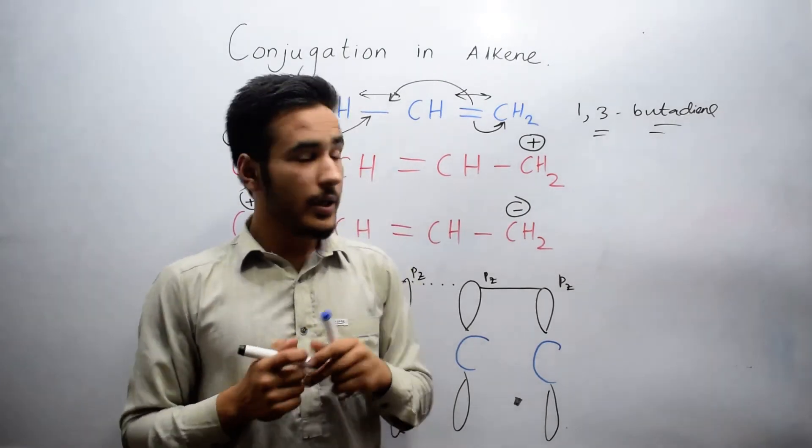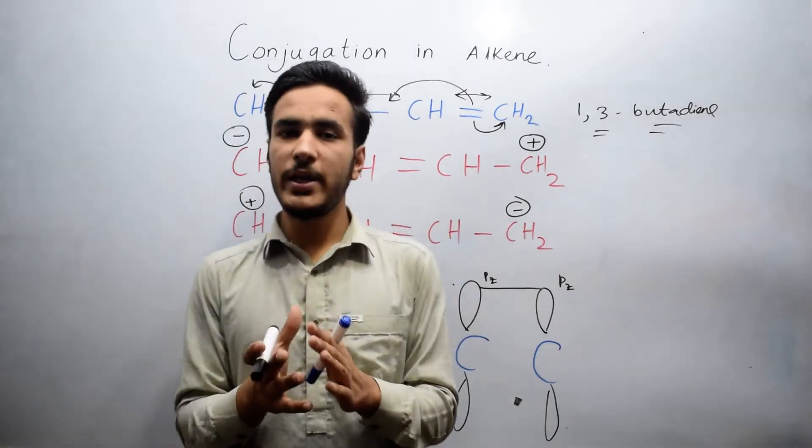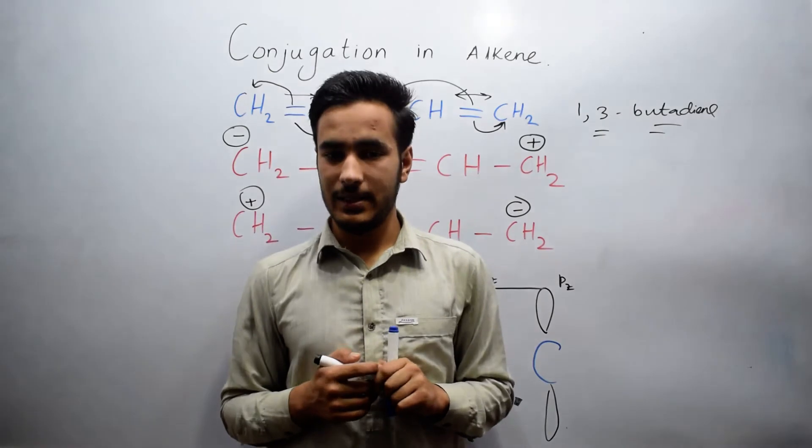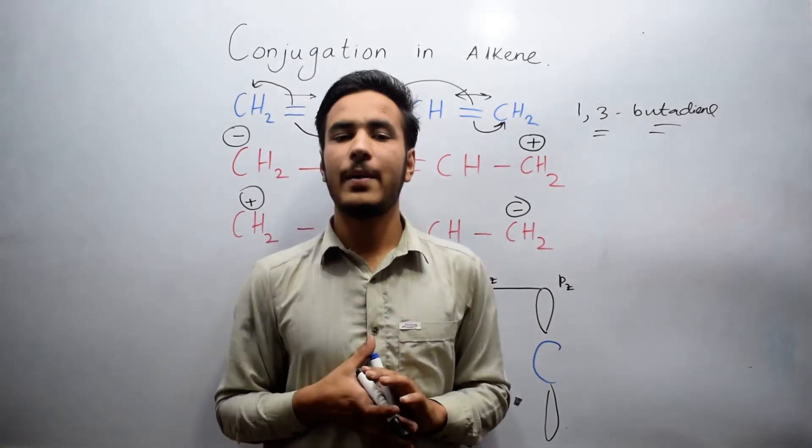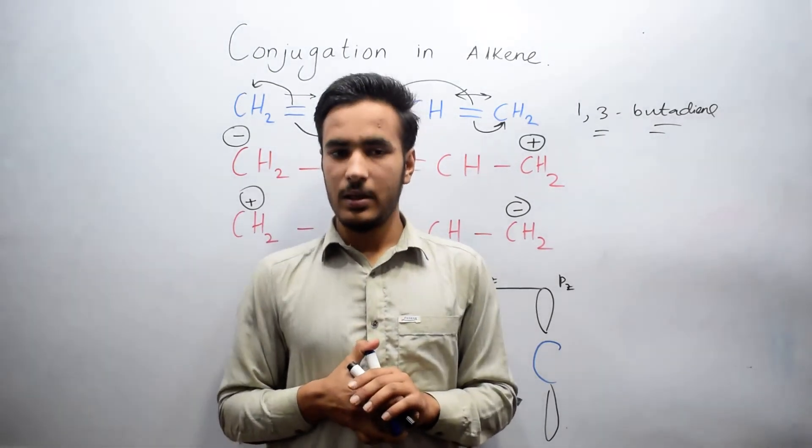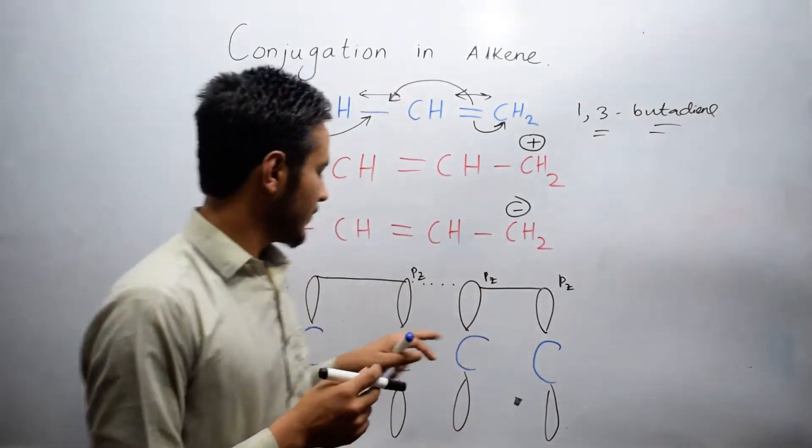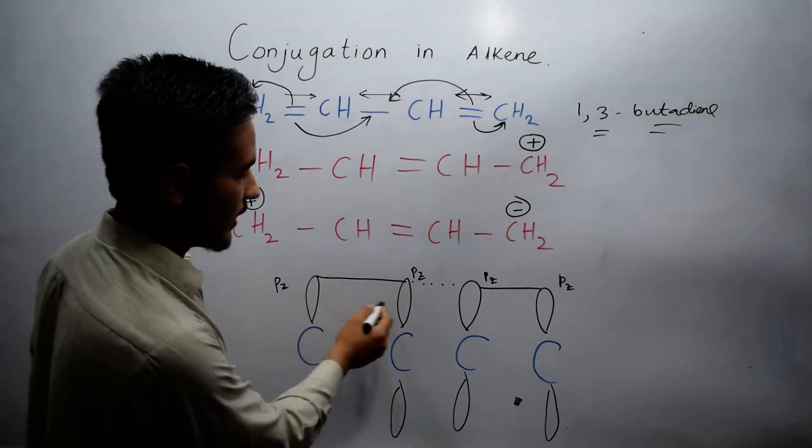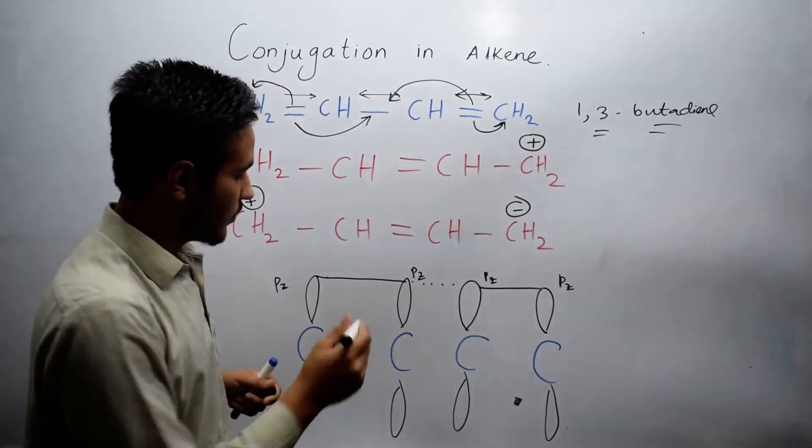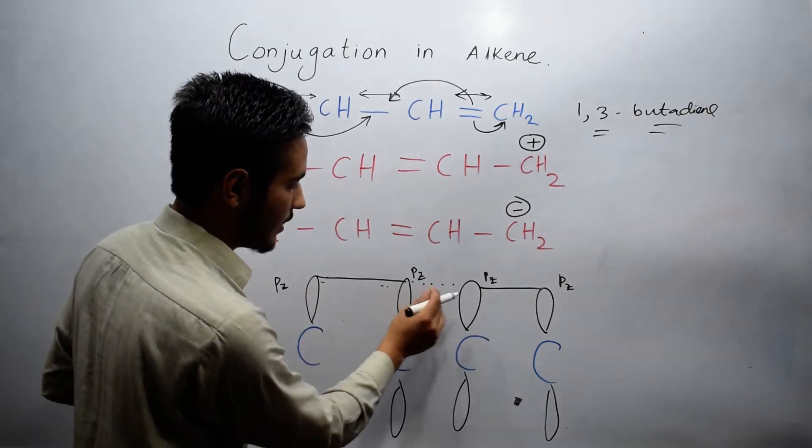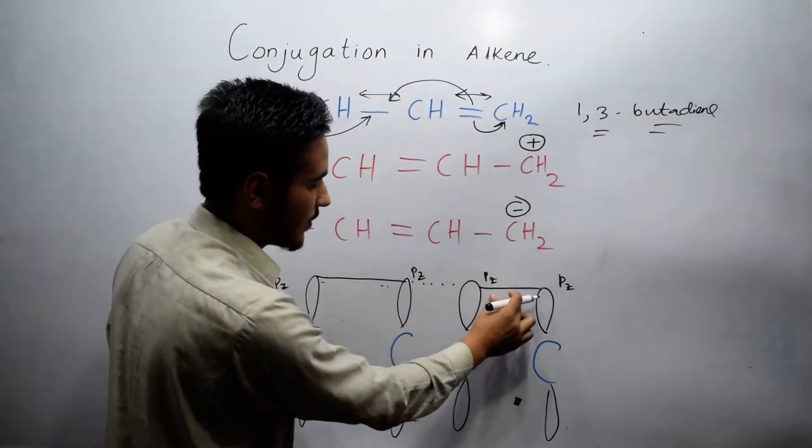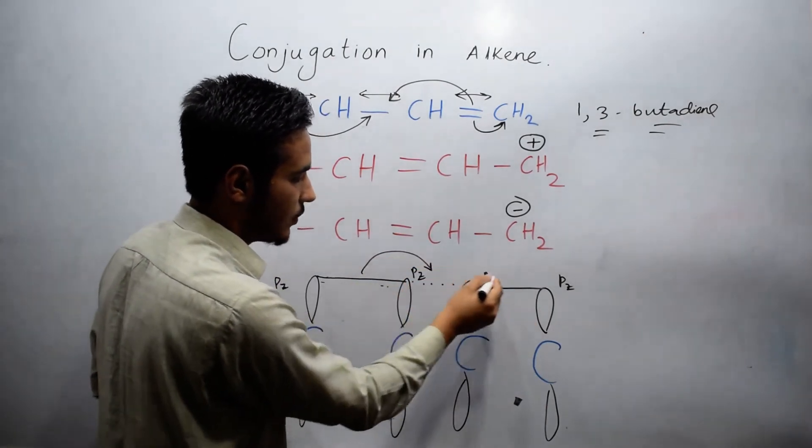In sp2 hybridization, one 2s and two 2p orbitals take part. Each carbon has one unhybridized pz orbital, which is perpendicular to the plane and responsible for pi bonds. These pz orbitals form pi bonds that can change their location.